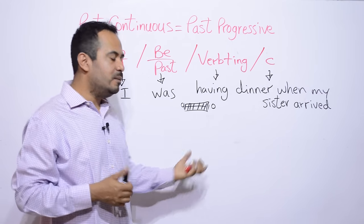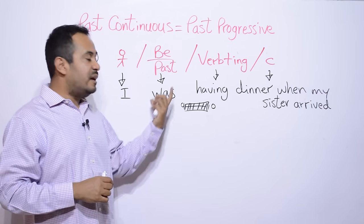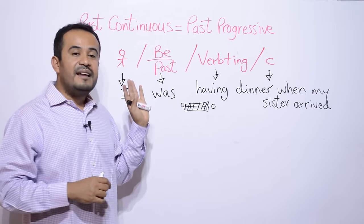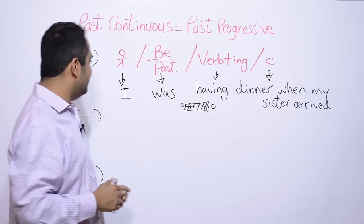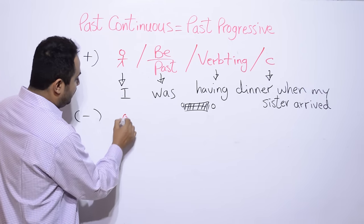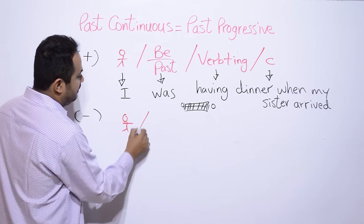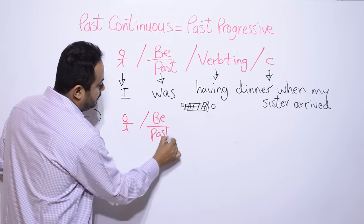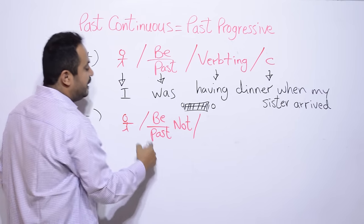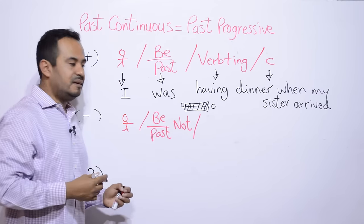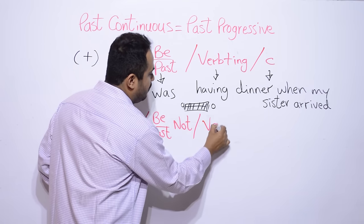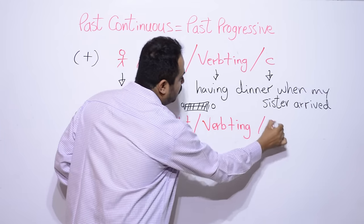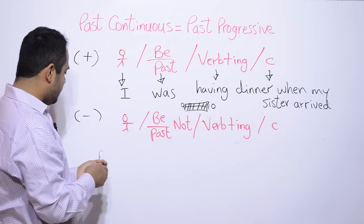Entonces, vamos a hacer este mismo, esta misma oración, pero la vamos a pasar al modo negativo. Básicamente, la oración afirmativa de la negativa se va a diferenciar de la palabra not. Es lo único que va a hacer la diferencia. Entonces, sujeto, I, después, be en pasado, pero negativo. Vamos a ponerle be past not. Después, un verbo más ing. Después, un complemento.